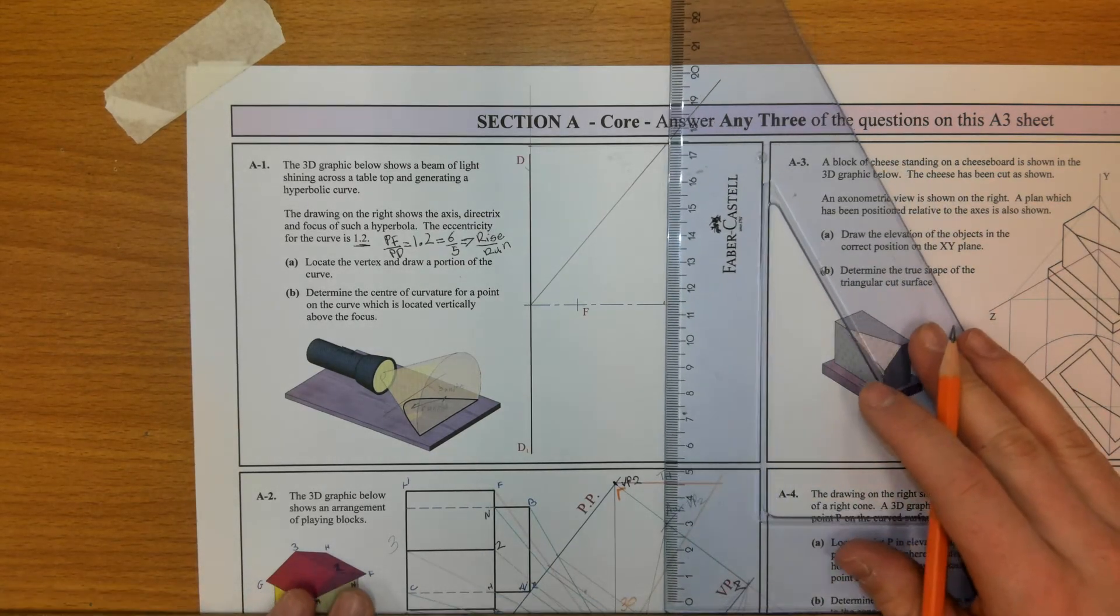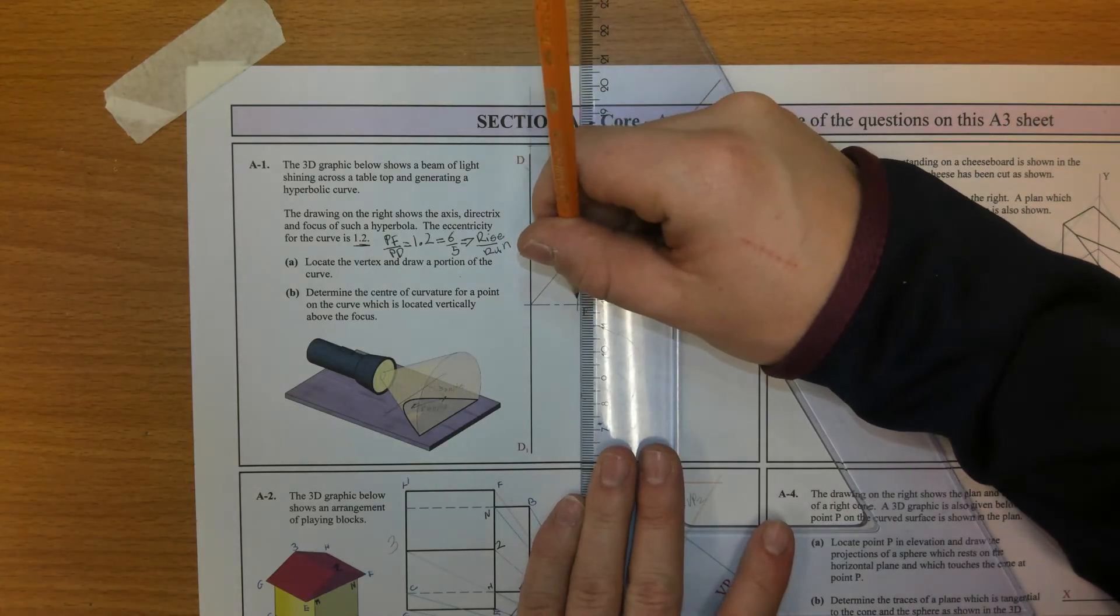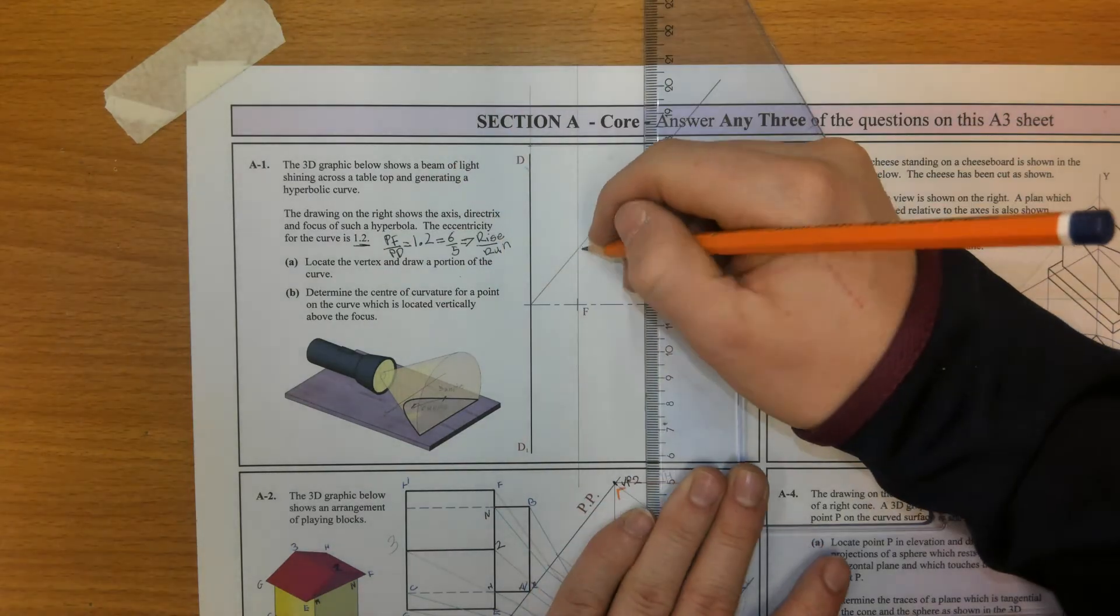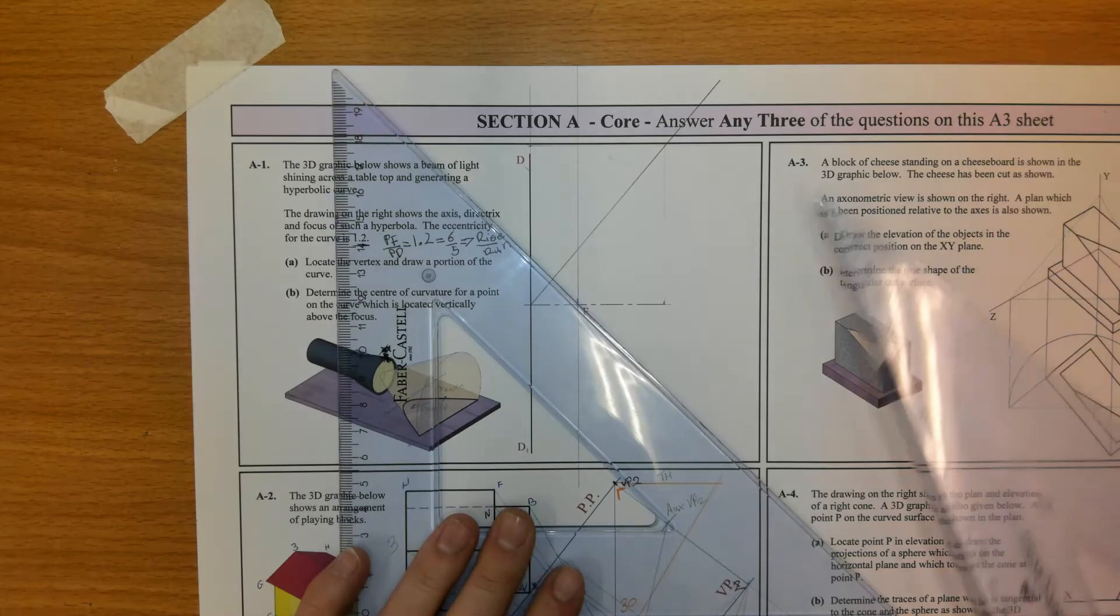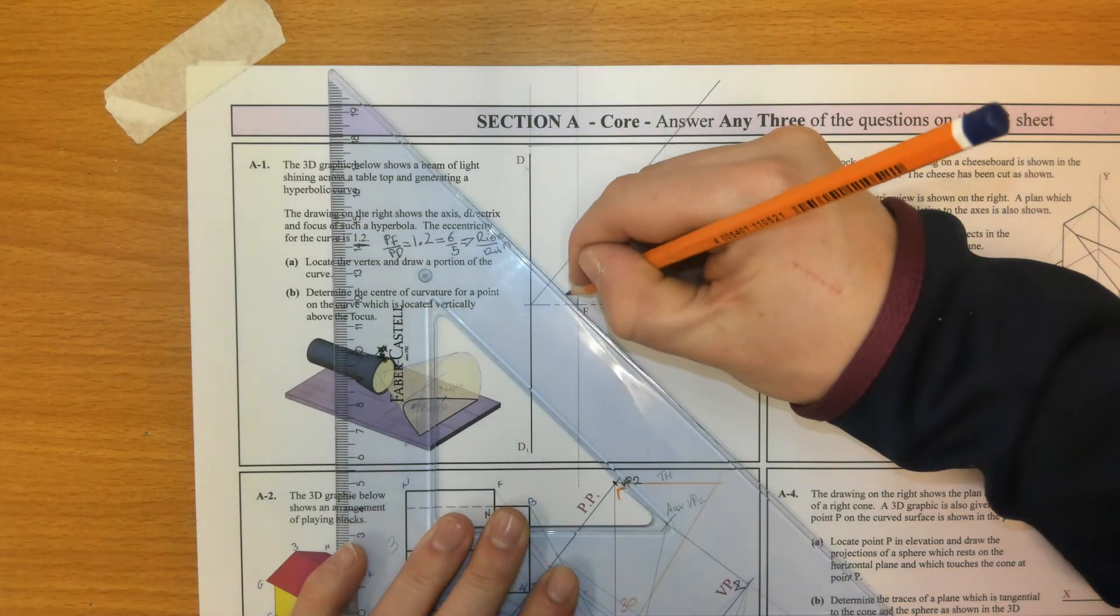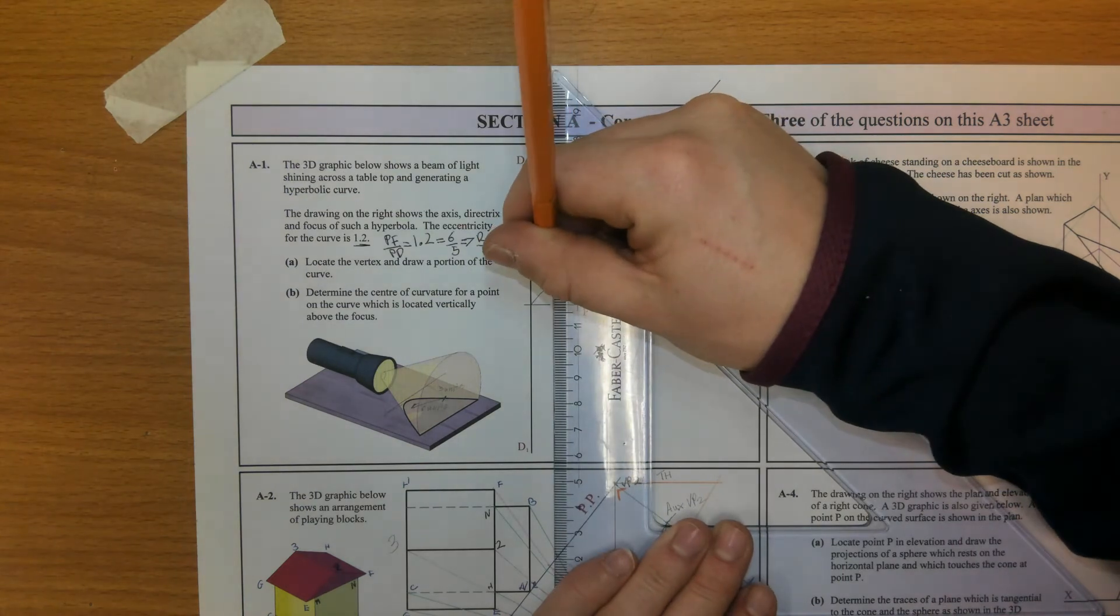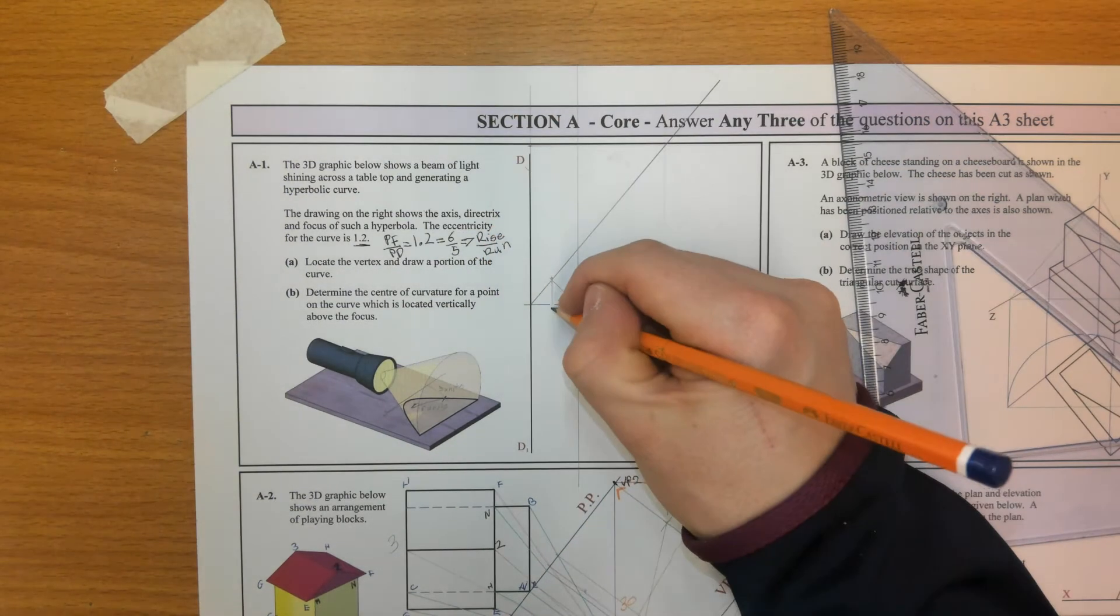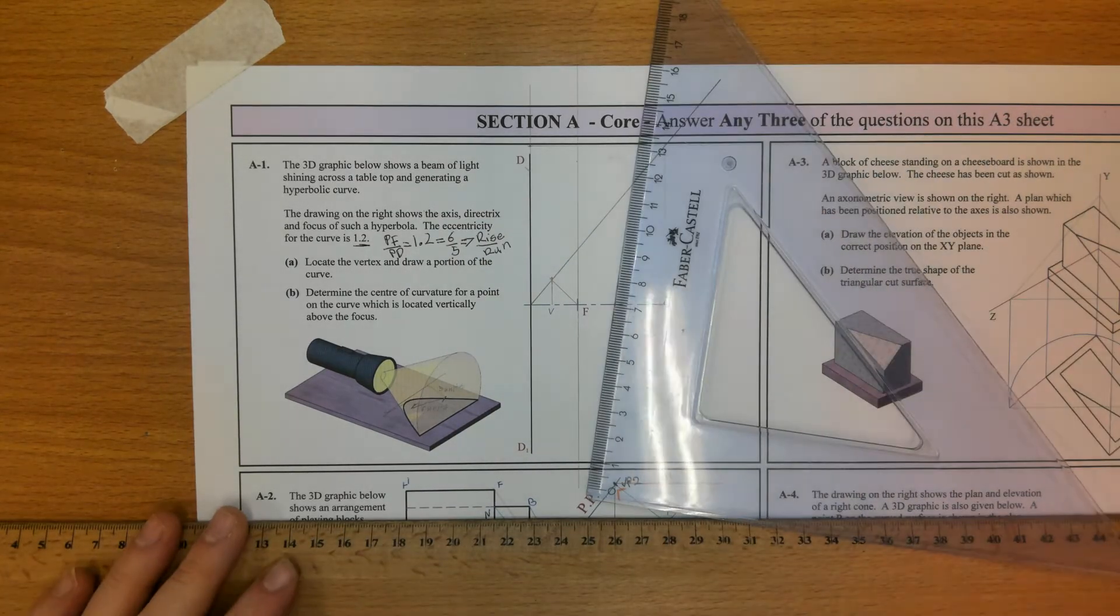Now, locate the vertex. From F, I'm going to draw a vertical line up. It's called the lattice rectum. And then from our focus here, I'm going to go 45 degrees back. Where it hits the line of eccentricity, I'm going to drop down until it hits the major axis. And that's the vertex. That's a method common to all conics to find the vertex.